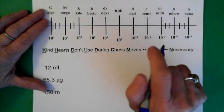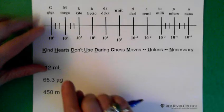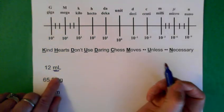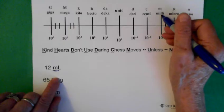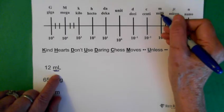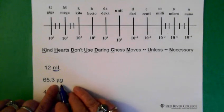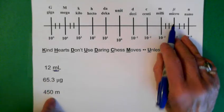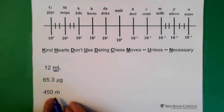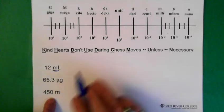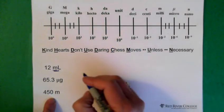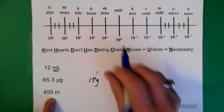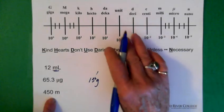If you have a number like 12 milliliters, where is it on the scale? We know we're looking at the prefix milli, so we look for milli — and here it is. For 65.3 micrograms, we look for micro — that's where we are on the scale. For 450 meters, there's no prefix in front of meters, so we're at the basic unit. And 13 grams with no prefix is also at the basic unit — right here on the scale.